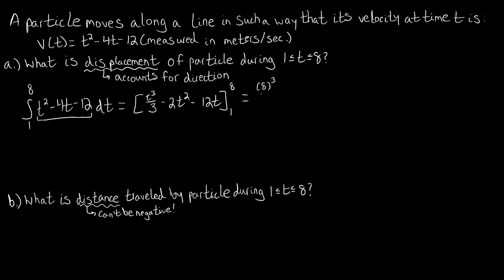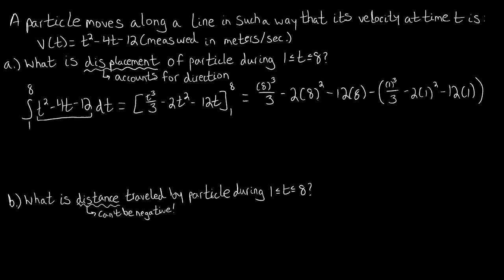Using the evaluation theorem: capital F of b gives us 8 cubed over 3 minus 2 times 8 squared minus 12 times 8, and we subtract the quantity 1 cubed over 3 minus 2 times 1 squared minus 12 times 1. After evaluating all the algebra, we get negative 119 over 3. This means over the interval one to eight, our particle moved 119 over 3 meters in the negative direction, since displacement accounts for direction.